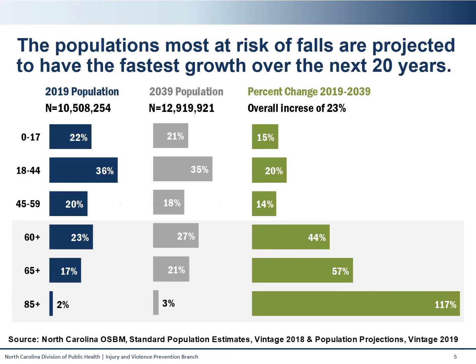The population in NC is aging. It's important to note that the populations most at risk of falls are projected to have the fastest growth over the next 20 years. On this slide, we can see the projected estimates of population growth in NC. The first column shows the estimated 2019 NC population by age group. The gray column in the middle is the projected estimated population for 2039. The last column on the right in green shows the percent change in population over the next 20 years. This data shows us an overall increase in the state population of 23%, with the largest increases in populations of concern for injury topics such as falls and traumatic brain injuries.